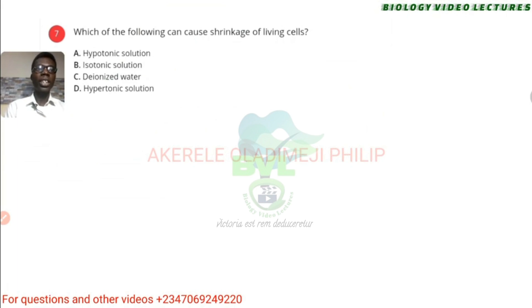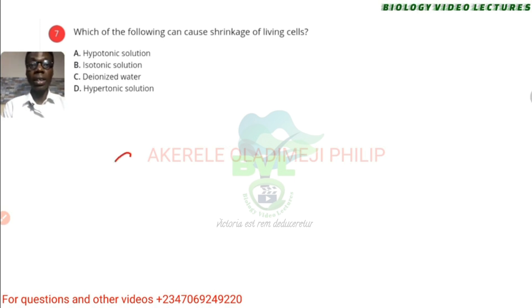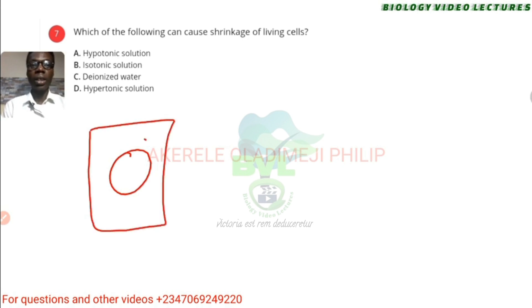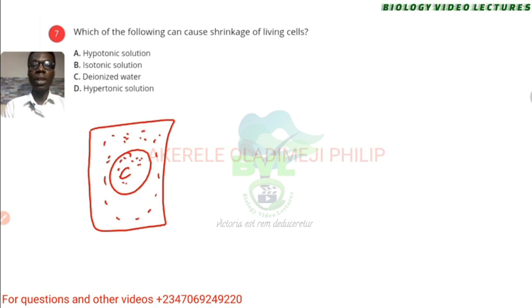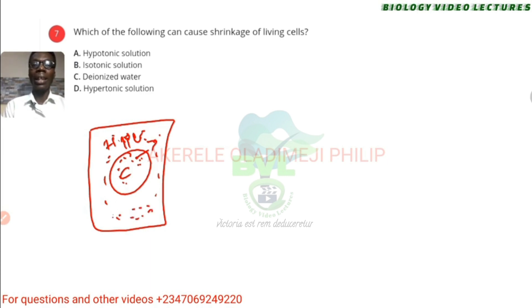Which of the following can cause shrinkage of cells? When you put a cell in different types of solutions — if the solution is stronger than what the cell has inside, a stronger solution is called a concentrated or hypertonic solution. What happens is the water within the cell is sucked out — we call that exosmosis. But if the solution surrounding the cell is diluted, we call that hypotonic solution. In that case, the cell will suck in water — we call that endosmosis.